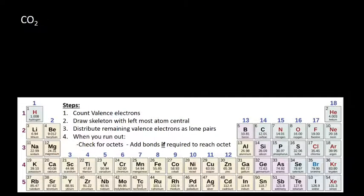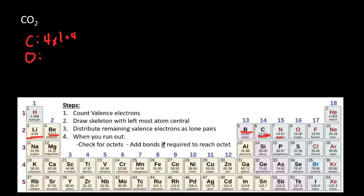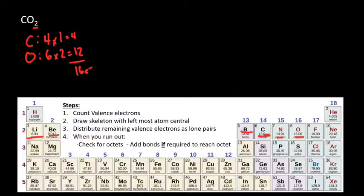Let's do two more molecules — we'll move a little faster. CO2, carbon dioxide. First, count the valence electrons. Carbon is right here and has one, two, three, four — just one carbon, so that's four electrons from carbon. Oxygen comes two more blocks over, so it has six. There are two of them, so that gives us 12 electrons. We add up: that's 16 valence electrons total. It's an even number, so we're happy. Step one is done.